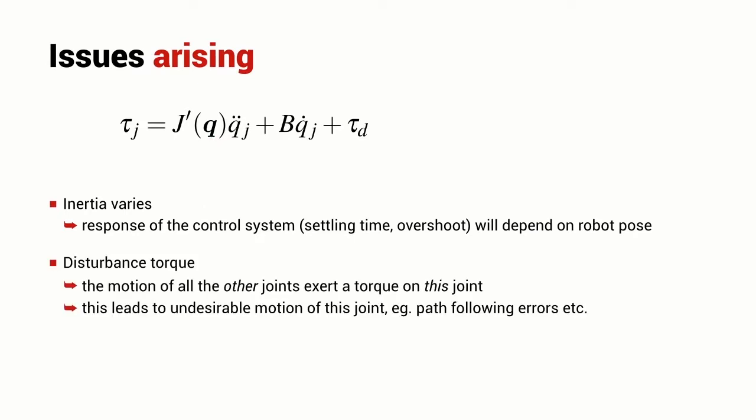The other big issue is the disturbance torque. That's a torque that's exerted on joint J due to motion of all of the other joints, acceleration and velocity and also due to gravity. And this may lead to undesirable motion of the joint. It may lead to path following errors for example.